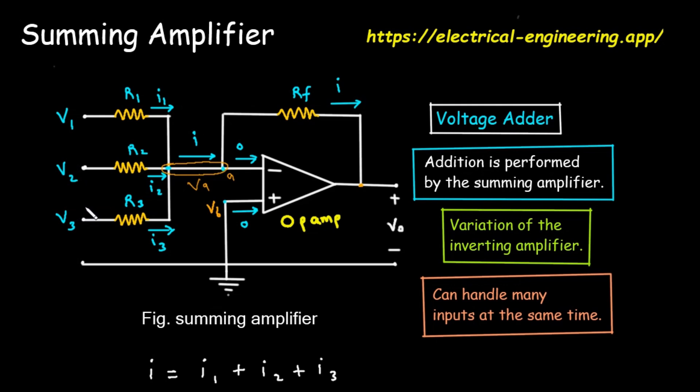Each of these input voltages is connected to the op-amp's inverting, or minus, input. But they don't connect directly. Each one passes through its own resistor. V1 connects through R1, V2 through R2, and V3 through R3.